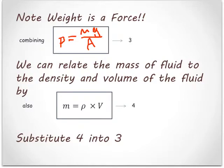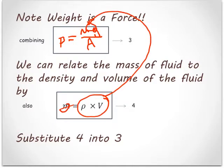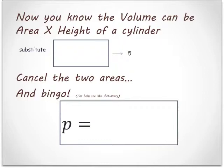Now, we can relate the mass of the fluid to the density and volume of the fluid. So mass equals density times volume. Now we're going to put this equation here for mass into that one there. So pressure equals density times volume times gravity divided by area.